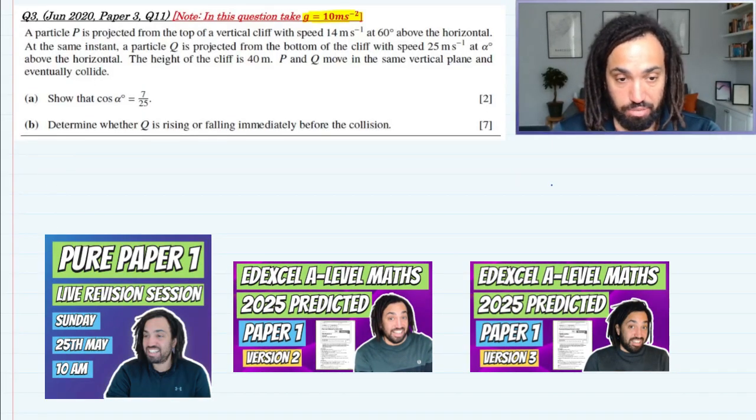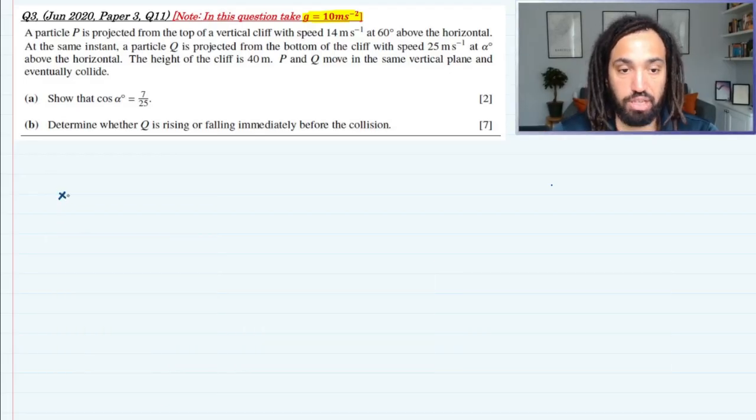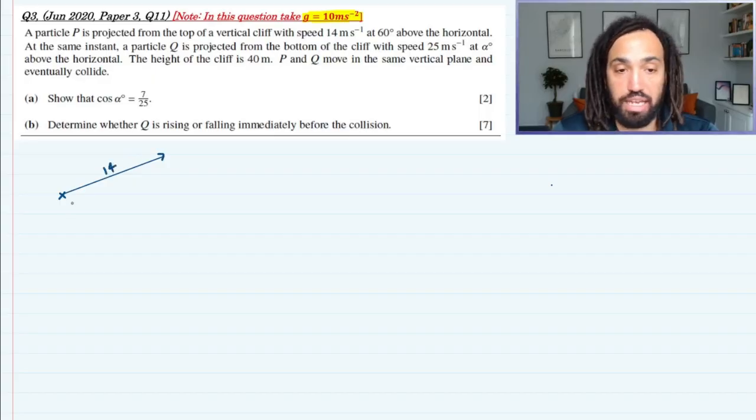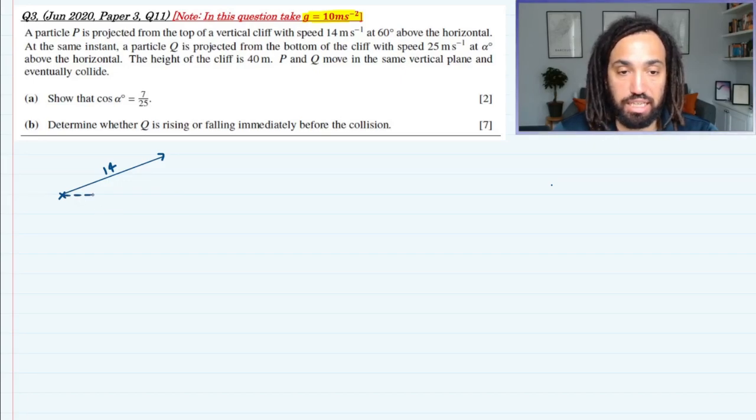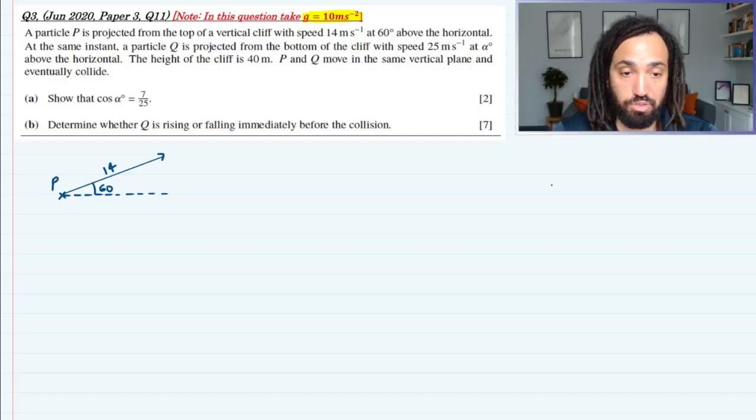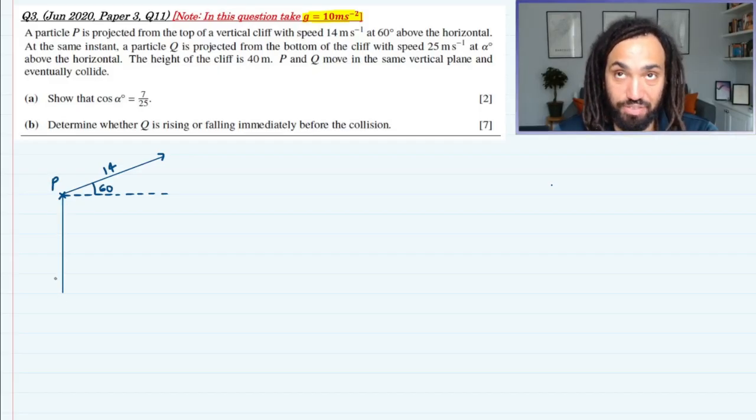So projectiles question. The first thing I'd want to do for a projectiles question is just draw a little sketch. It says that P is going to be projected at a speed of 14 at an angle of 60 to the horizontal. It also says that P is on top of a cliff.